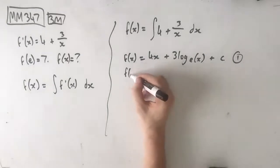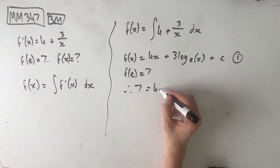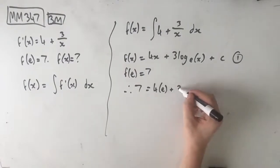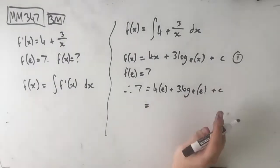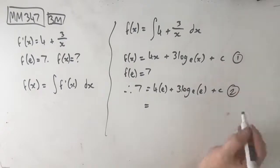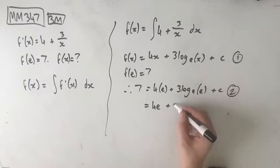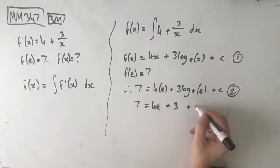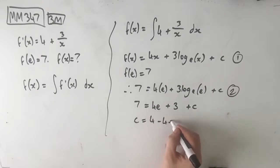Then we know that f of a is equal to 7, so therefore 7 equals 4 times a plus 3 log e of a plus c. Awesome, and this is our second mark, so subbing in that gives us our second mark, which gives us 4a plus log e of a is just 1, so this is just 3 plus c, so therefore c is equal to 4 minus 4a.